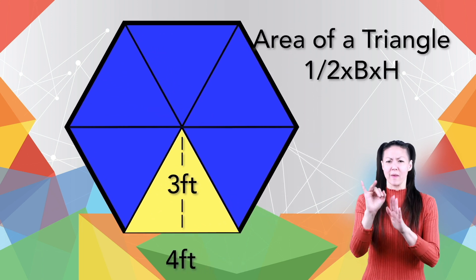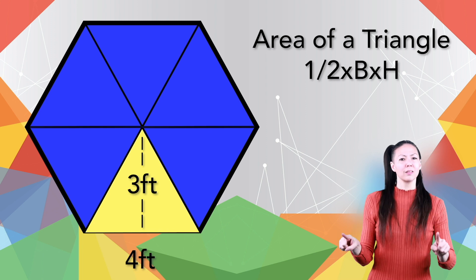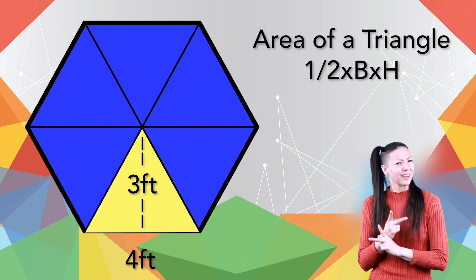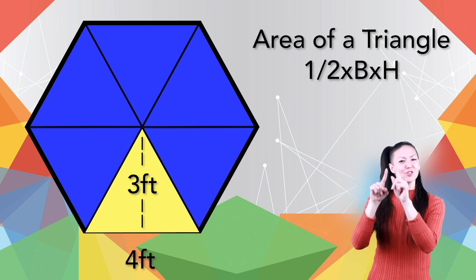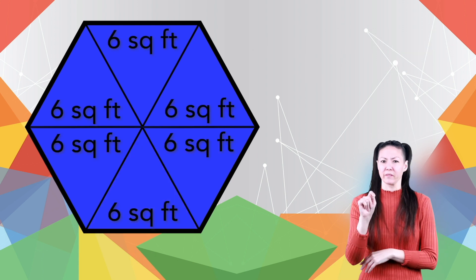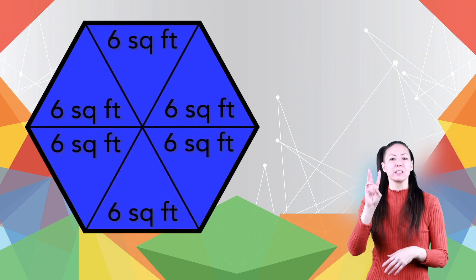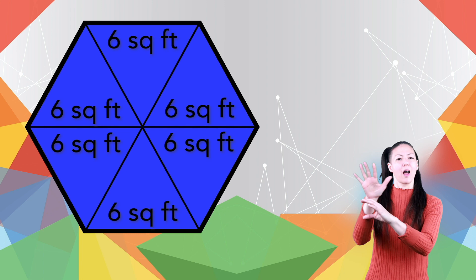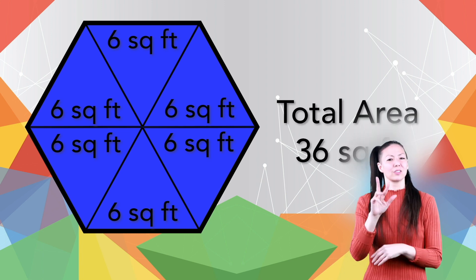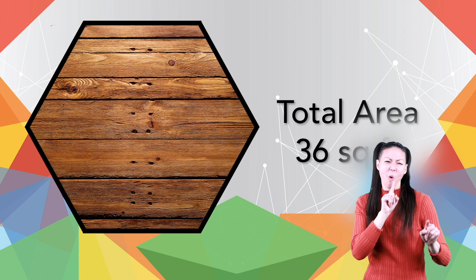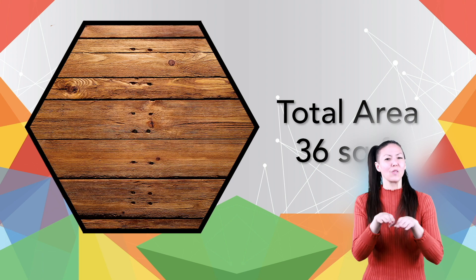Using our formula for the area of a triangle, we can quickly calculate that the area of each triangle is six square feet, and therefore all six triangles that make up the entire gazebo equal 36 square feet. She'll need to order 36 square feet of wood for the floor.